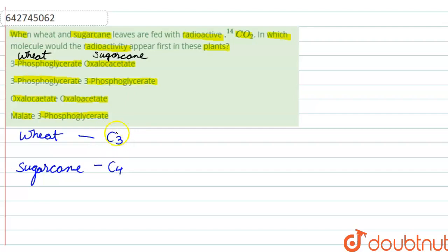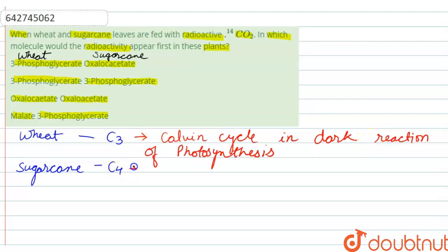What does C3 and C4 mean? C3 means the plant follows the C3 pathway, meaning these plants use the Calvin cycle in the dark reaction of photosynthesis. C4 plants use the C4 pathway, or the Hatch-Slack pathway, during the dark reaction.